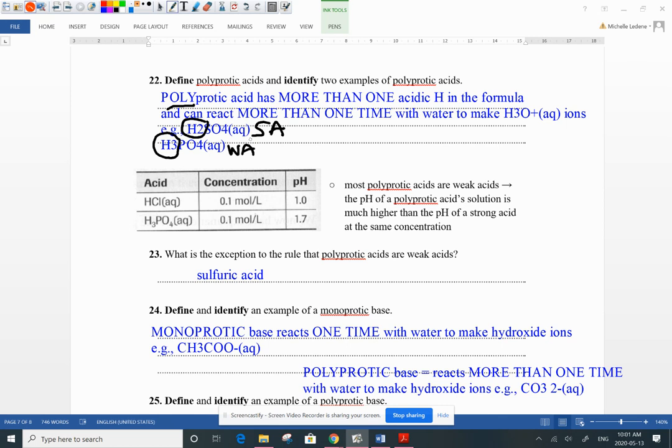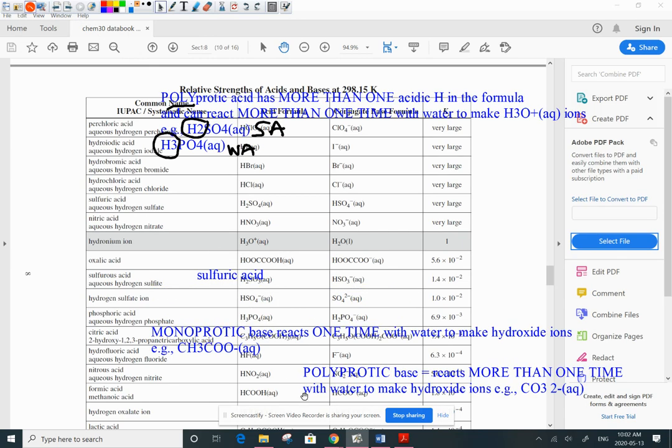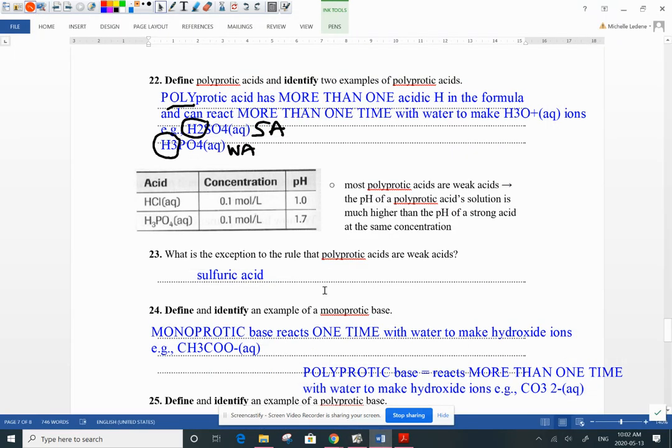Okay, and so let's just briefly take a look at our data booklet and see what we have for examples of polyprotics. Aha, here's H2SO4. Just ignore this stuff down here for a sec. Sorry about that. Oh, here's an H here and an H here. That guy is polyprotic. Oh, H2 polyprotic. Okay, and so OH3 polyprotic. All those guys are polyprotic acids. They have more than one ionizable hydrogen to react with water to make hydronium.